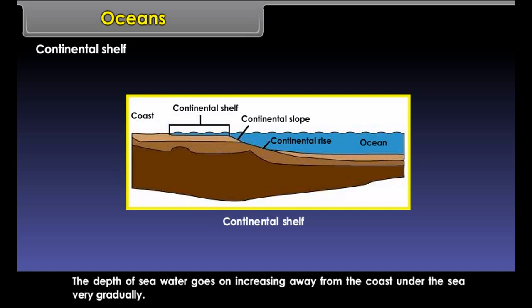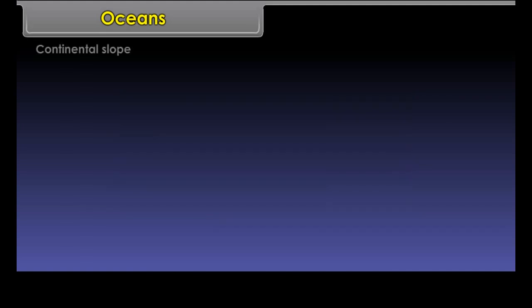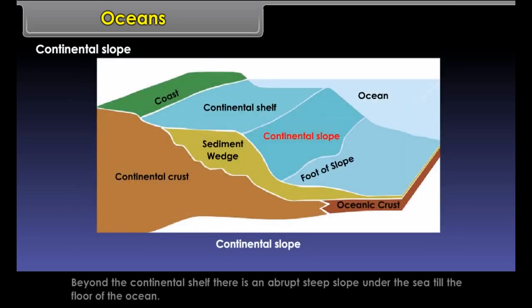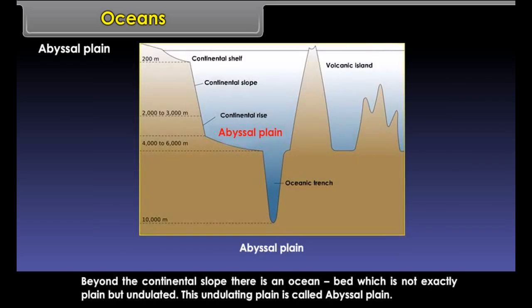From the coast towards the open sea, there is a stretch of shallow sea. The depth of the sea goes on increasing gradually away from the coast; this part of the ocean is called the continental shelf. Beyond the continental shelf, there is an abrupt steep slope under the sea down to the floor of the ocean. This part is called the continental slope.